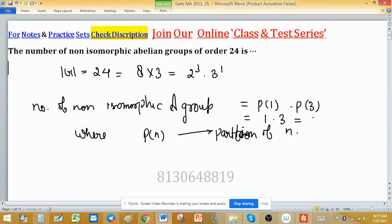And partition of 3 is 3, so 1 into 3 is 3. So 3 will be the answer, means 3 non-isomorphic abelian groups exist for groups of order 24.